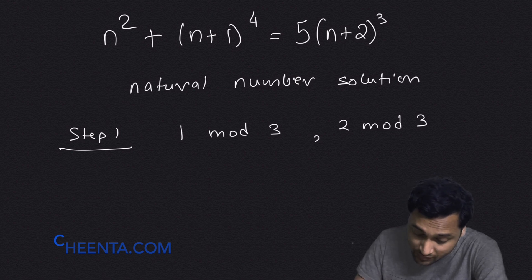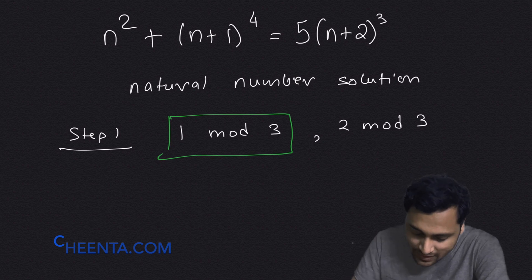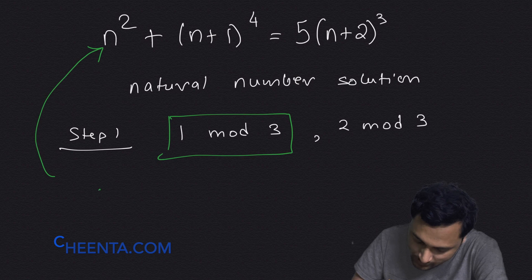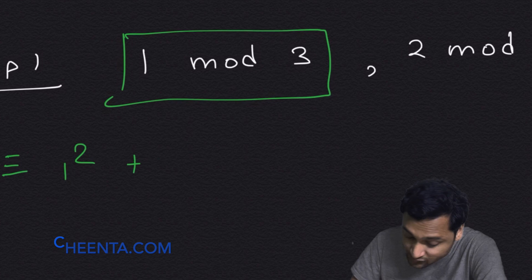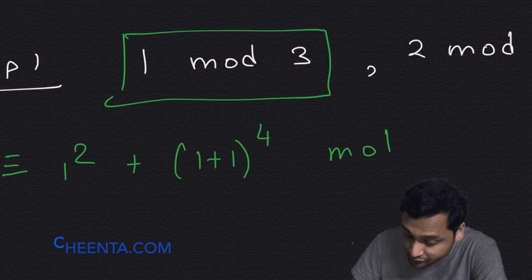Suppose we want to know whether numbers of the form 1 mod 3 work. We can directly plug it in. The left hand side will be congruent to 1 squared plus 1 plus 1, raised to 4, modulo 3.